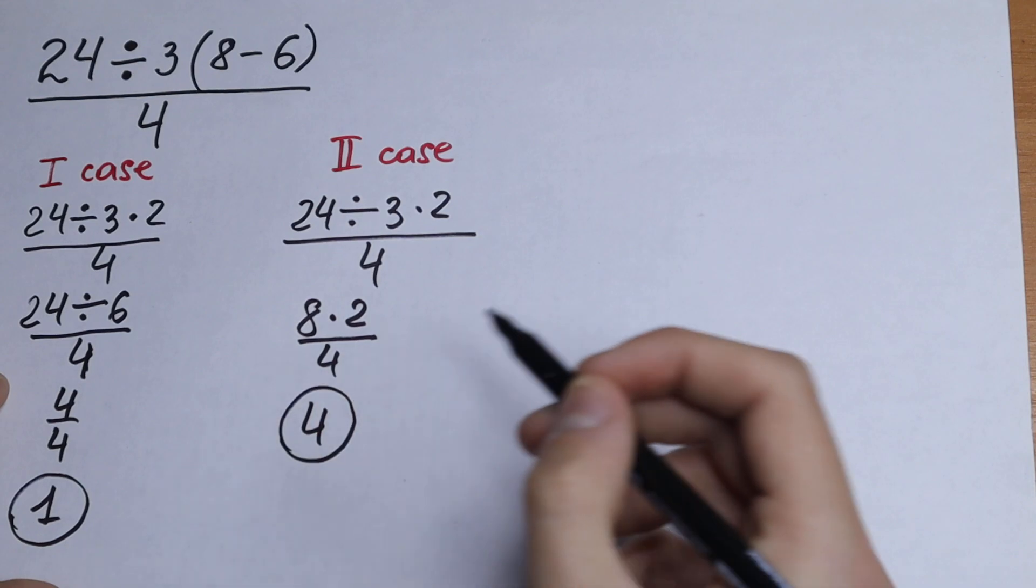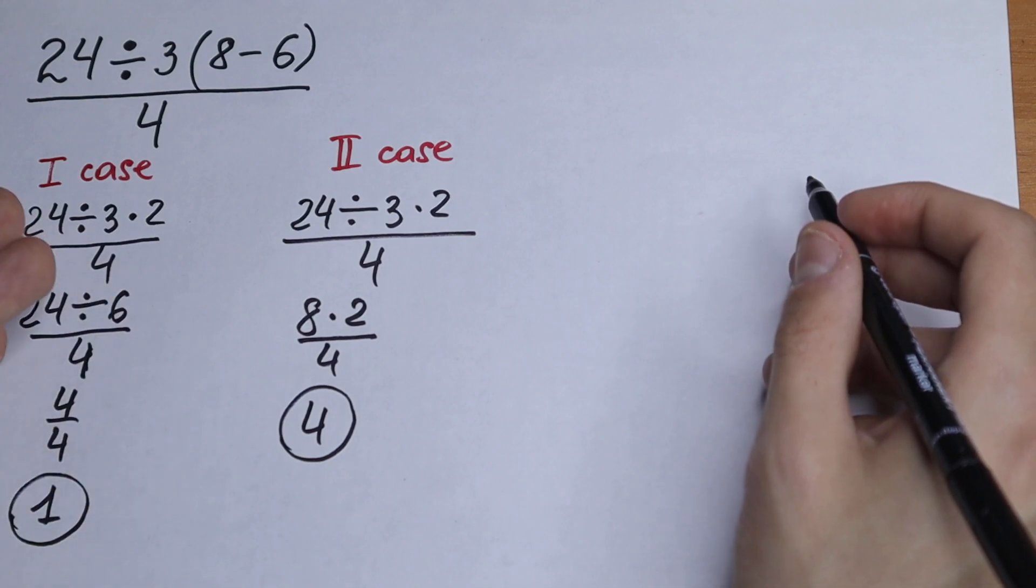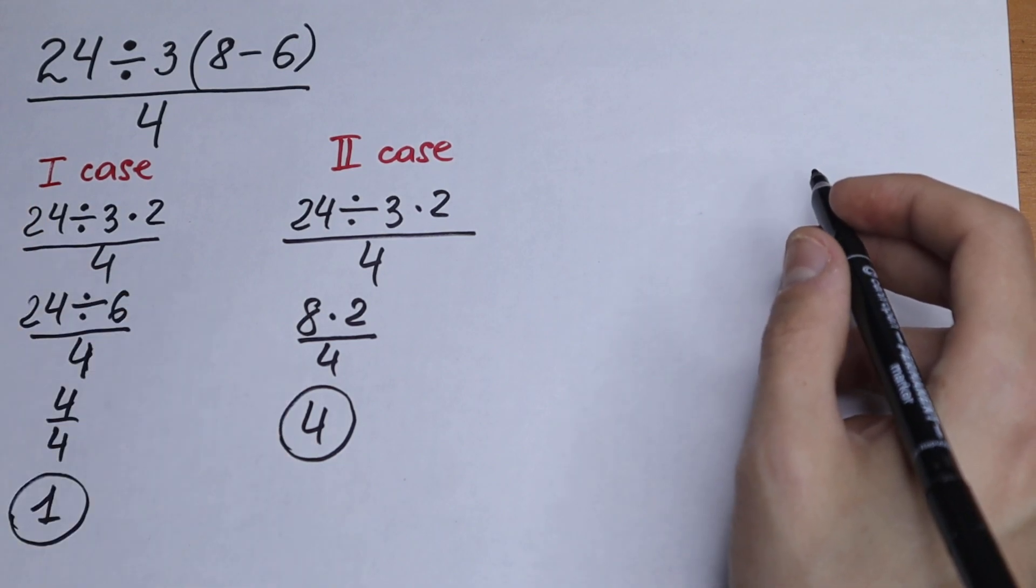So the second answer is 4. So we have two answers, but we use the same logic. We have division and multiplication, of course. This operation has the same priority. So which one is correct?